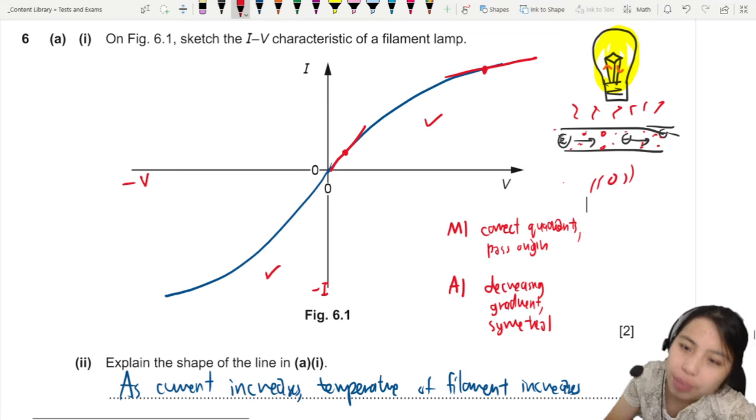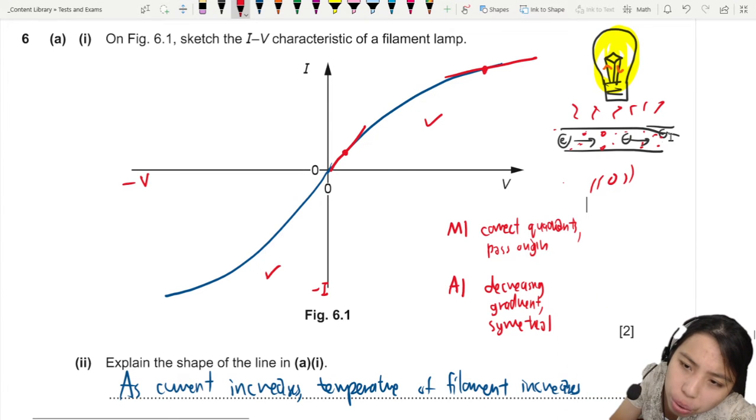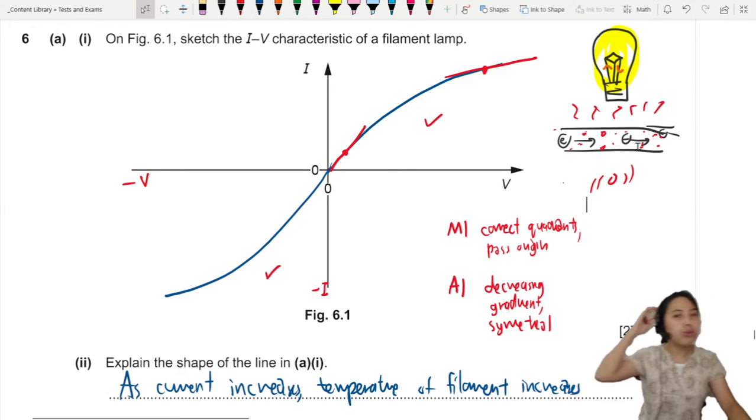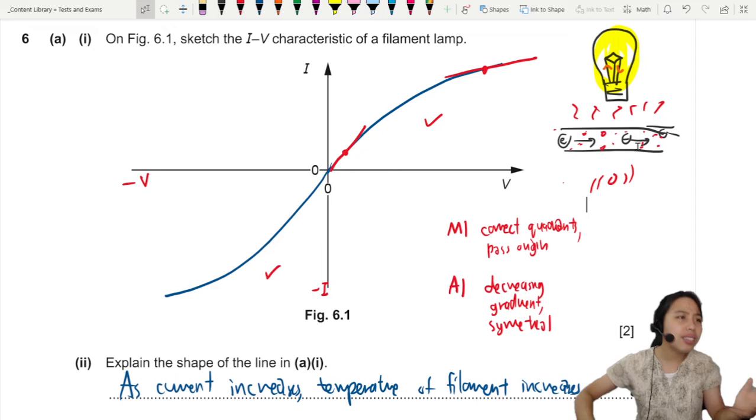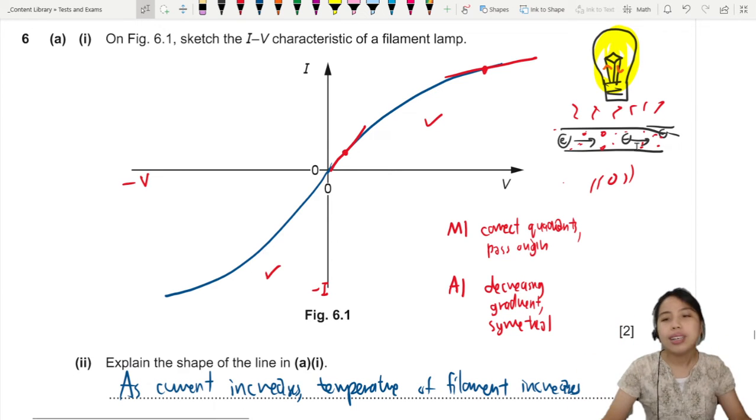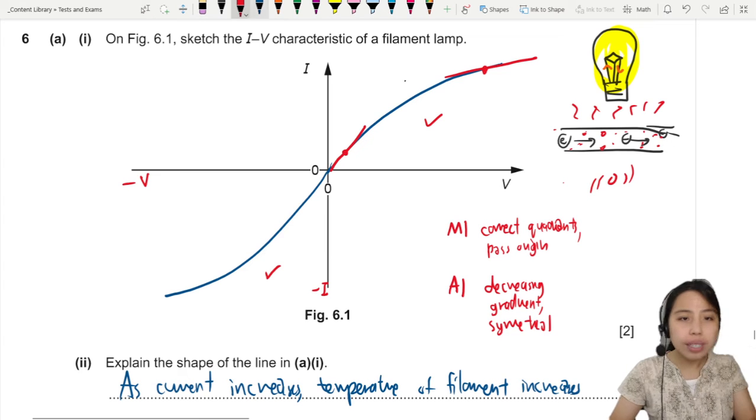So your poor electron is like, excuse me, I want to pass through and all these people just dancing and vibrating around. So a lot of resistance. It's like you trying to walk through a dance party. Everyone is just dancing and you're just like, I just want to get to the end of this tunnel. Just let me pass. A lot of resistance.